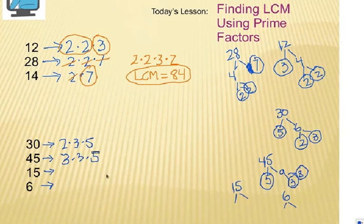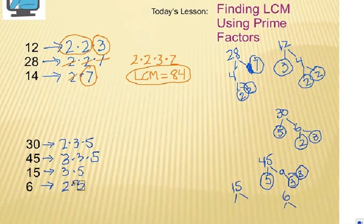15 — we can figure out that it's got to be 3 times 5. That's the only way to prime factorize 15. And 6 must be 2 times 3.